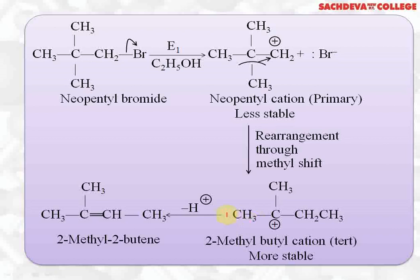Following rearrangement, there is abstraction of a proton from the beta carbon such that the alkene formed has the maximum number of alkyl groups (most substituted). So 2-methyl-2-butene is the major product. The product was formed through rearrangement by methyl shift, which converted the primary carbocation to a tertiary carbocation.